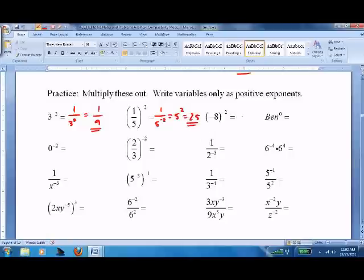Negative 8 to the negative 2 is 1 over negative 8 squared, which is 64. Anything to the 0 is 1. 0 to the negative 2 is 1 over 0 squared, which is undefined.